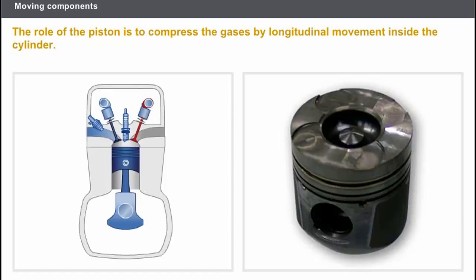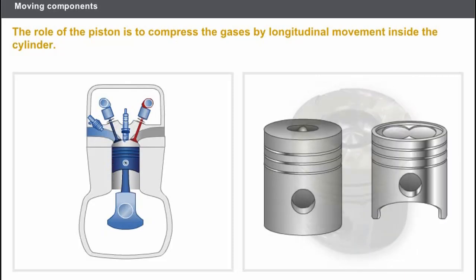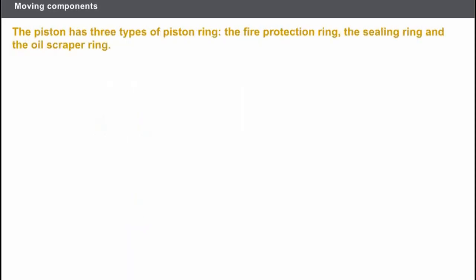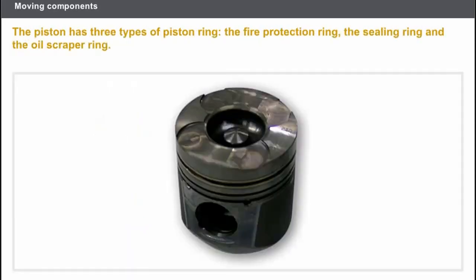The piston is moulded sometimes in cast iron, but usually of light alloy. To improve engine performance, the pistons may have several configurations. The piston has three types of piston ring, which are circular rings made of soft cast iron, sometimes steel, with a split groove which gives them a certain amount of elasticity.